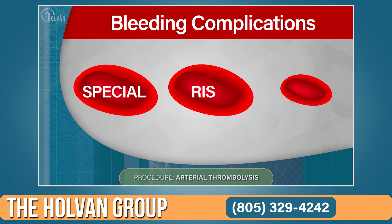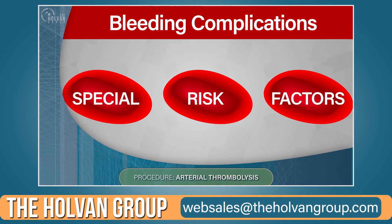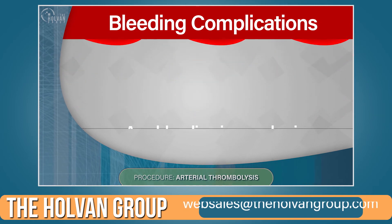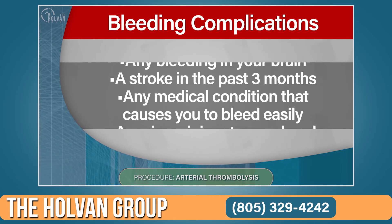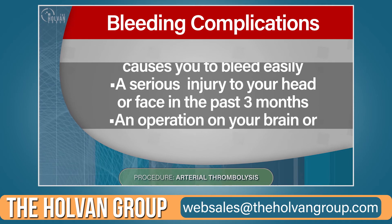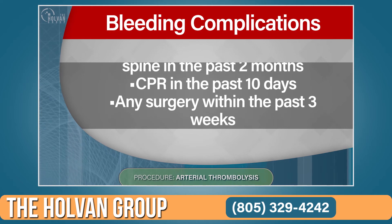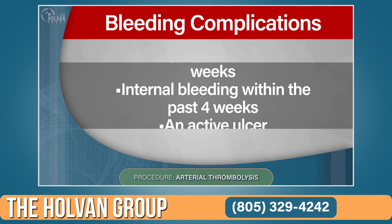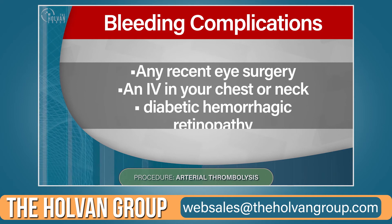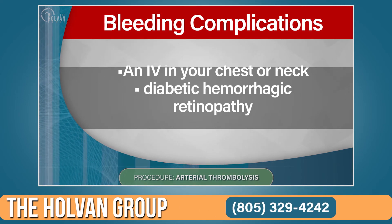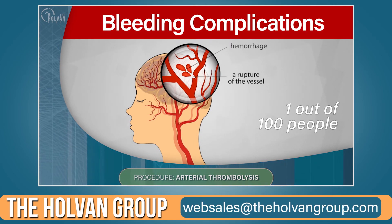There are certain things that place you at high risk for bleeding complications. If you've ever had any of the conditions on this list, make sure you tell your doctor: any bleeding in your brain, a stroke in the past three months, any medical condition that causes you to bleed easily, a serious injury to your head or face in the past three months, an operation on your brain or spine in the past two months, CPR in the past 10 days, any surgery within the past three weeks, internal bleeding within the past four weeks, an active ulcer, any recent eye surgery, an IV in your chest or neck, or diabetic hemorrhagic retinopathy.